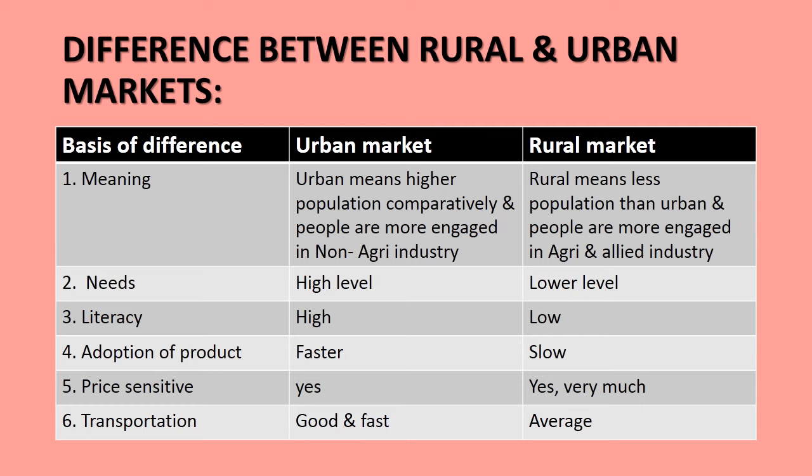The next basis of difference is needs. In urban markets, needs are at a higher level, while in rural markets, needs are at a very basic or lower level. The third basis of difference is literacy. Urban people have a higher literacy ratio, so they can compare products easily. In rural markets, the literacy ratio is low. Fourth is adoption of products — urban markets have faster adoption of new products as people are more literate and can compare products, whereas rural markets are slow to adopt new products because people are unaware of their features.